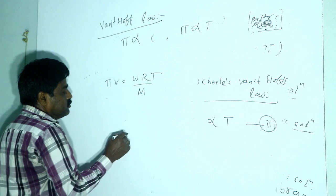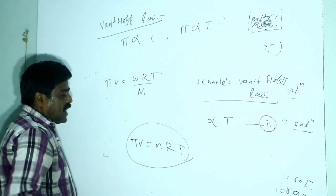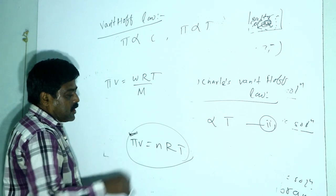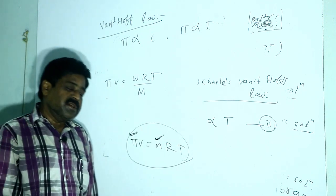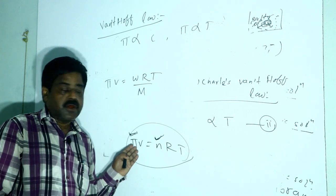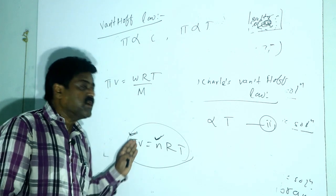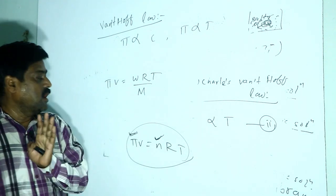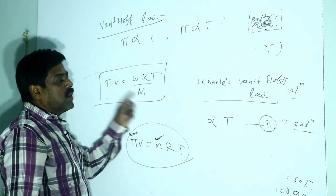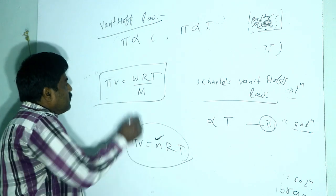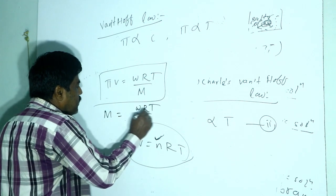From πV = nRT, and substituting n = W/M, we derive πV = WRT/M. Since osmotic pressure π depends on the number of moles of solute particles at constant temperature, osmotic pressure is confirmed to be a colligative property of dilute solutions. From this, we can determine the molecular mass of the solute.